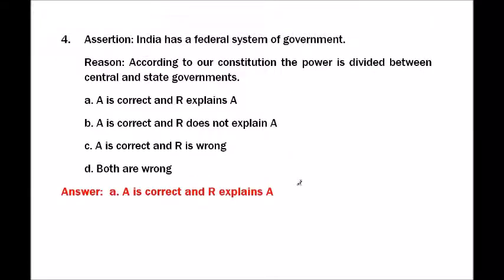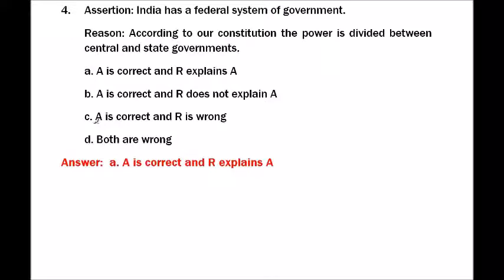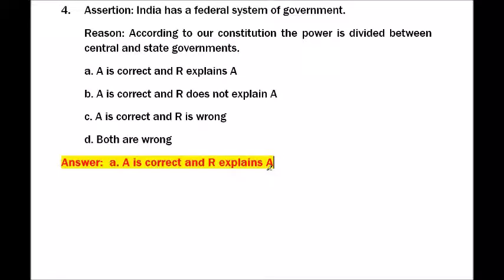Question four — assertion: India has a federal system of government. Reason: according to our constitution, the power is divided between central and state governments. Option A: A is correct and R explains A. Option B: A is correct and R does not explain A. Option C: A is correct and R is wrong. Option D: both are wrong. The answer is A — A is correct and R explains A.